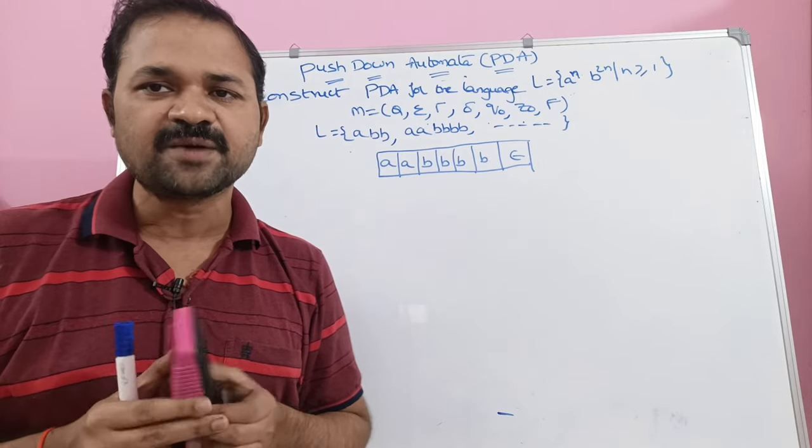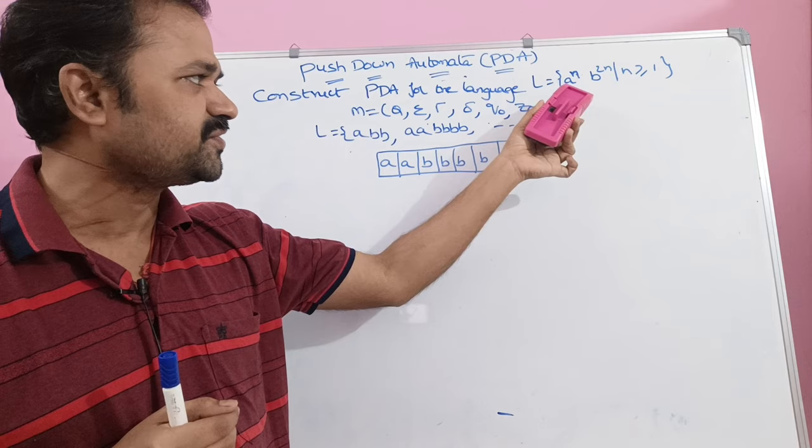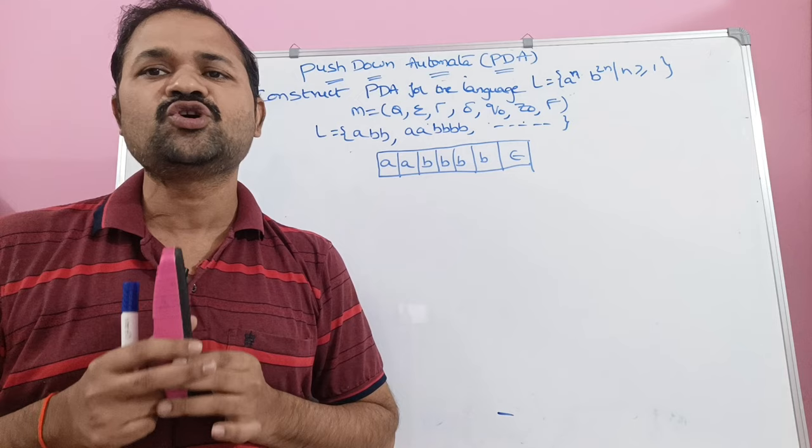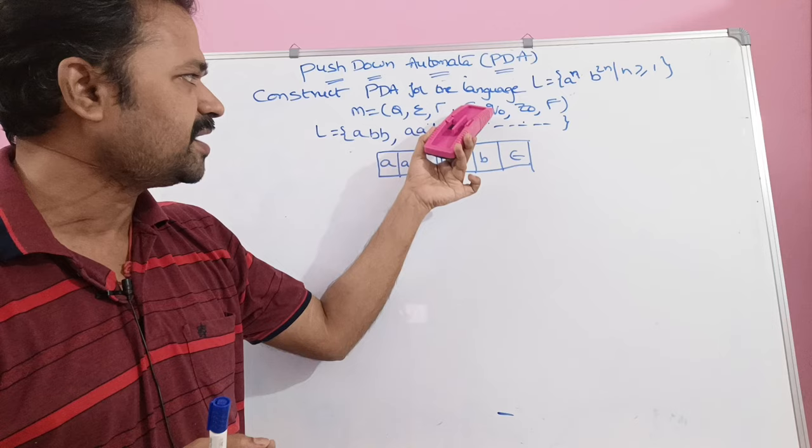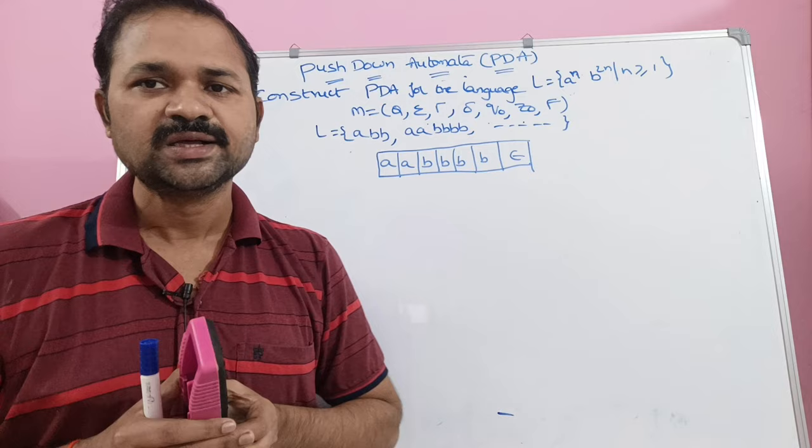Let's see this example: Construct a PDA for the language L = a^n b^(2n) such that n ≥ 1. We know that a PDA is represented by 7 tuples: q, sigma, tau, delta, q naught, z naught, f. First, let us find out delta, and based on delta we can write the remaining 6 tuples.